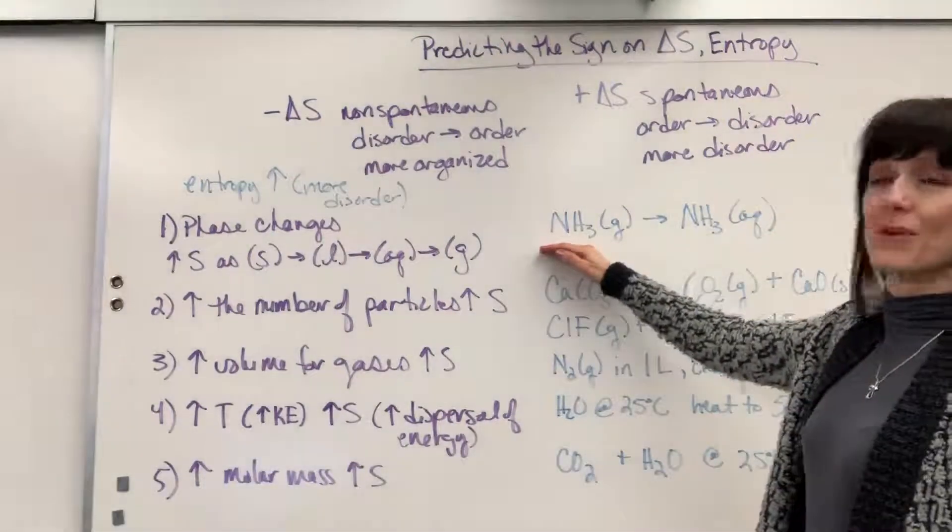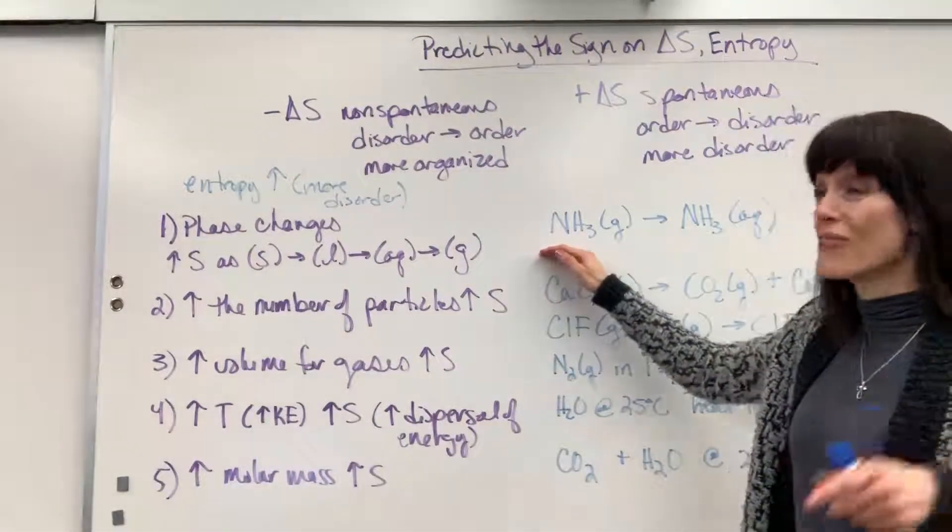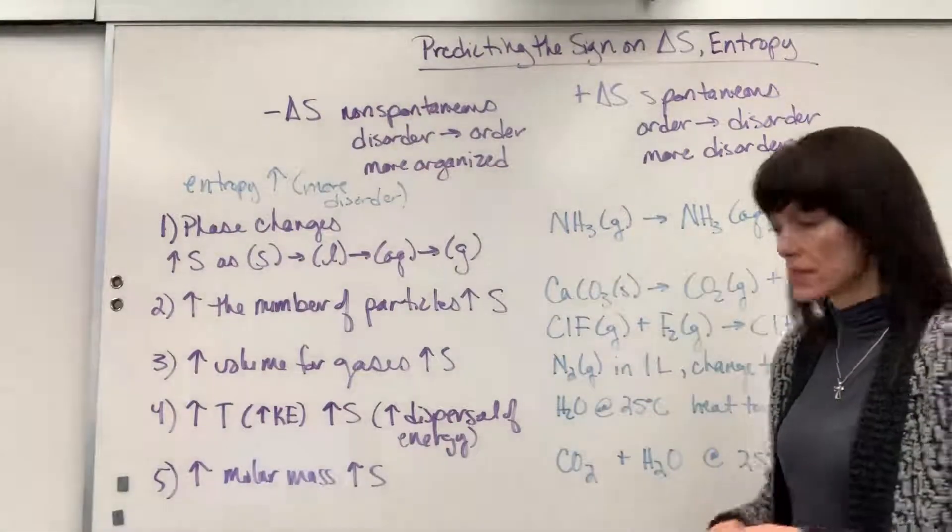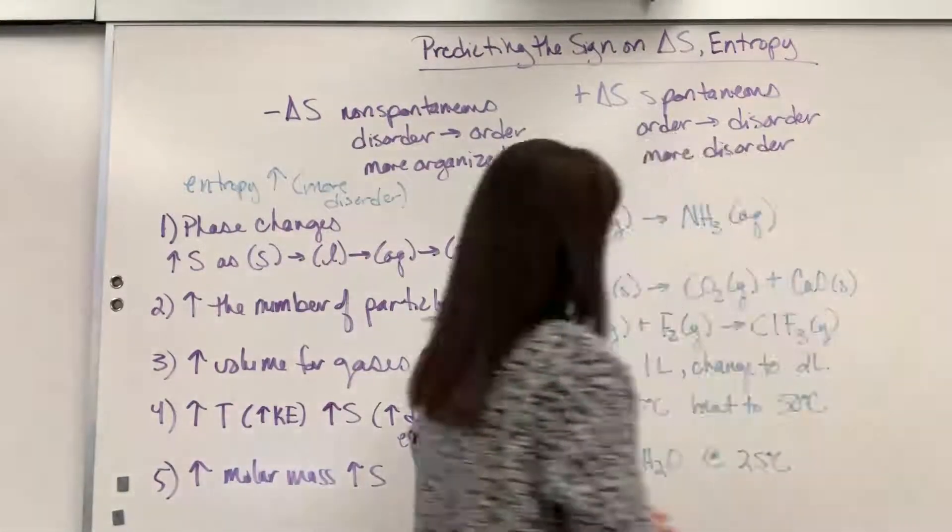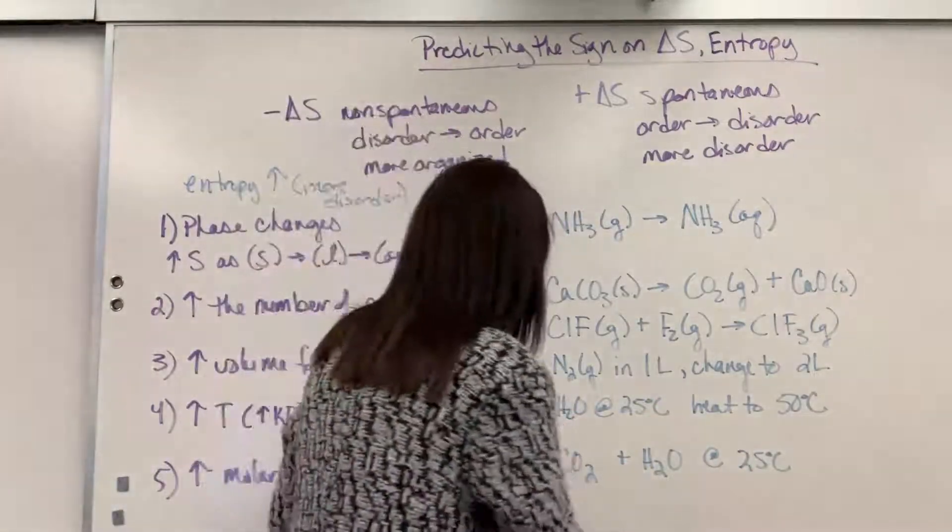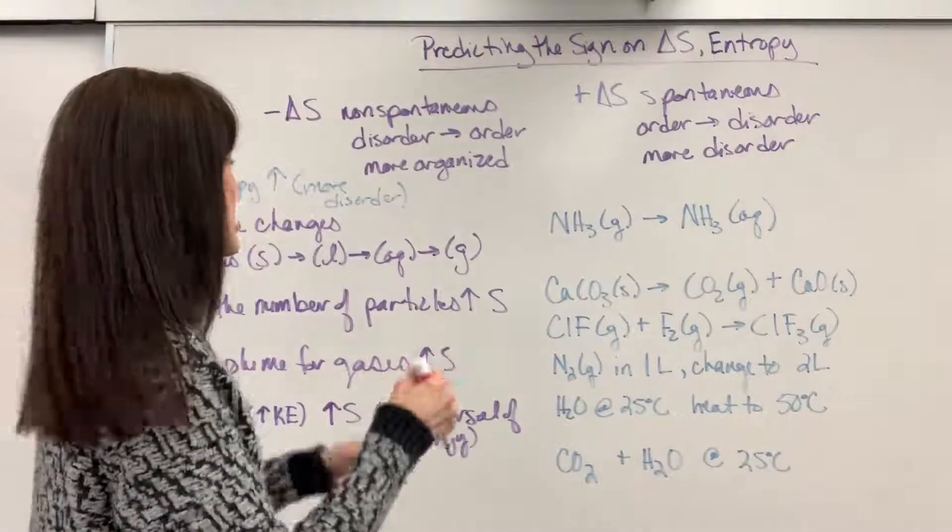So here's an example for you. Notice we're going from ammonia gas, and we're going to dissolve it in water to make it ammonia aqueous. So we want to know, is it going from order to disorder, disorder to order? This is literally what I'll have my students do. I'll have them write down O for order and DO for disorder.